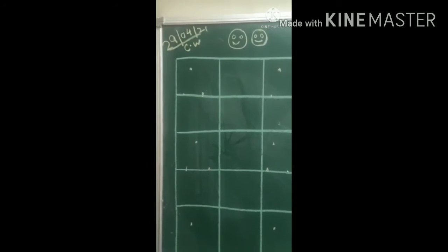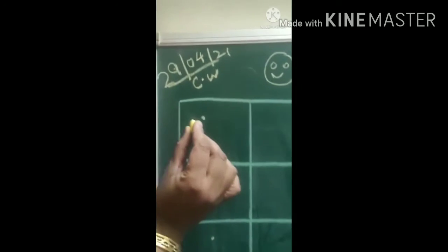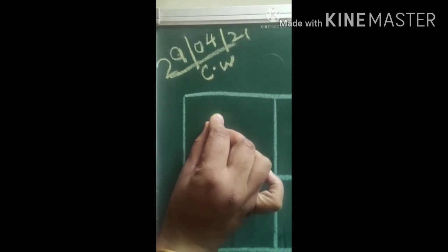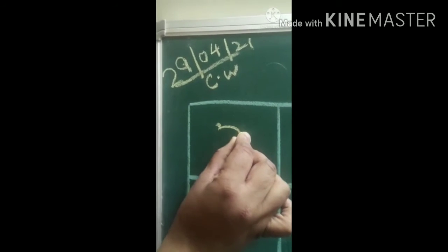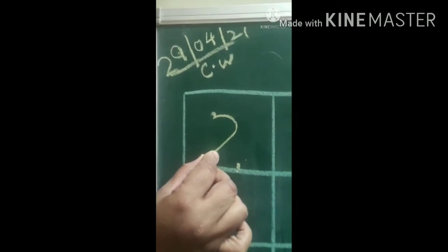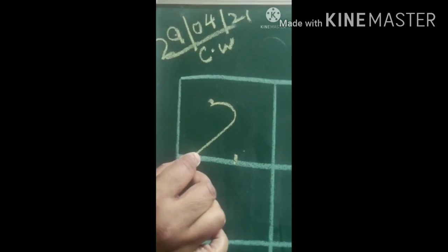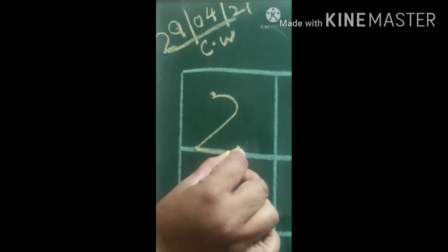Now students, look on the blackboard. First draw the dots. Take a pencil, hold it properly on the first dot. Bring down and then take it back.